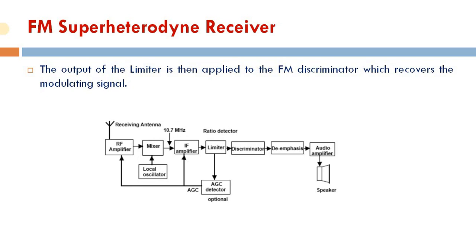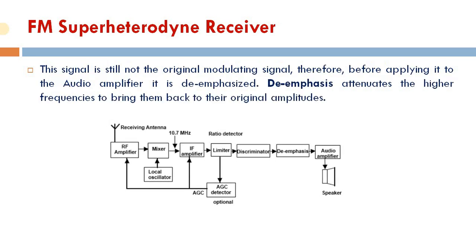The output of the limiter is then applied to the FM discriminator, which recovers the modulating signal. This discriminator acts as an FM demodulator. The signal at this stage is still not the original modulating signal, so it must be processed further before being applied to the audio amplifier.